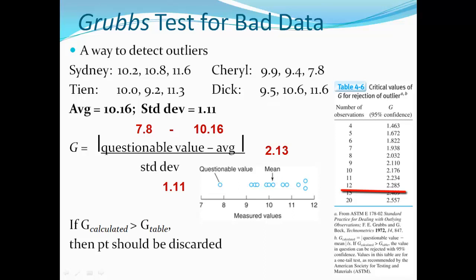When you look at your G table, the G table says that it's 2.285 for a total of 12 data points. They have a total of 12 data points. Here it's not a degree of freedom. Here it's just how many data points you have. So it's 12, and the G calculated is 2.13. So that point is actually good. You should not discard it. You should keep it. You should retain that 7.8 and use it in your statistical measurements.